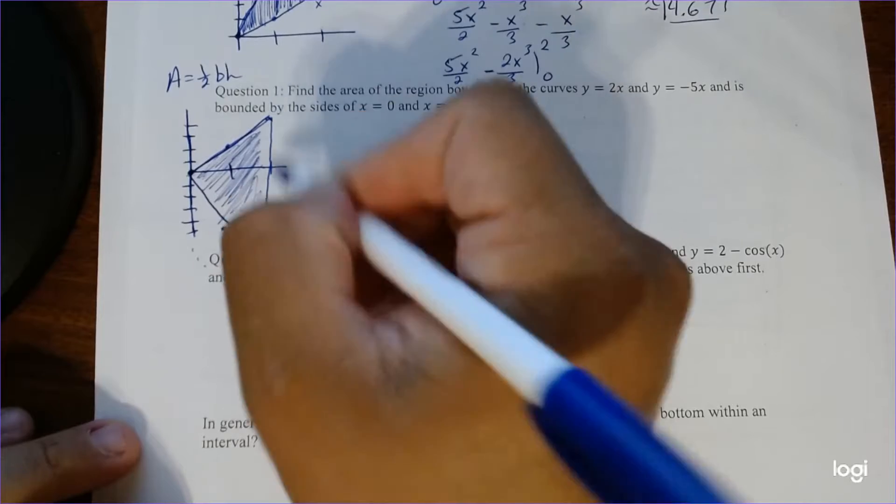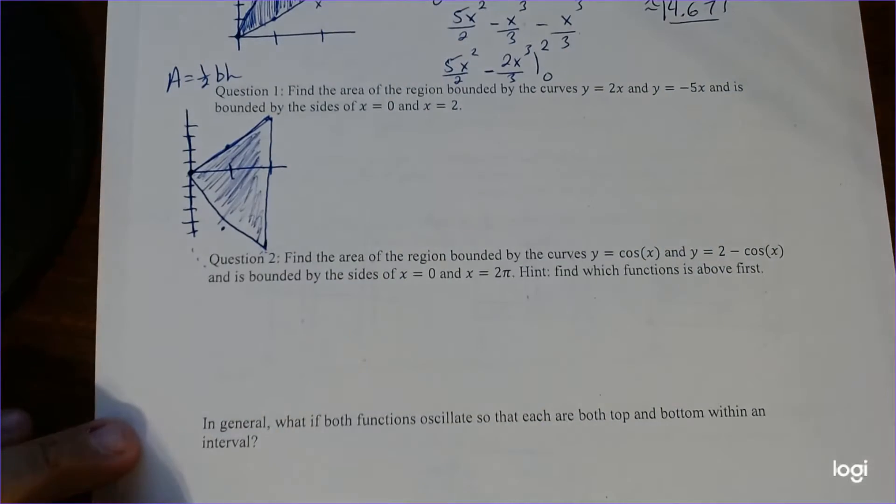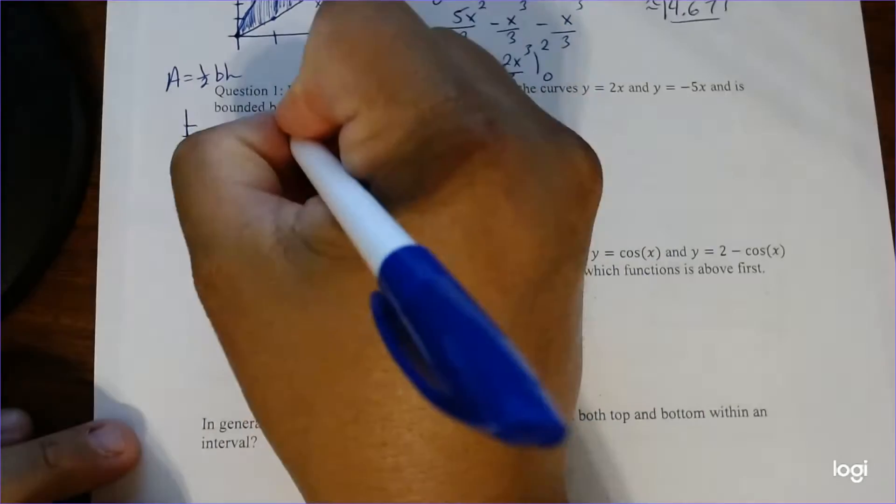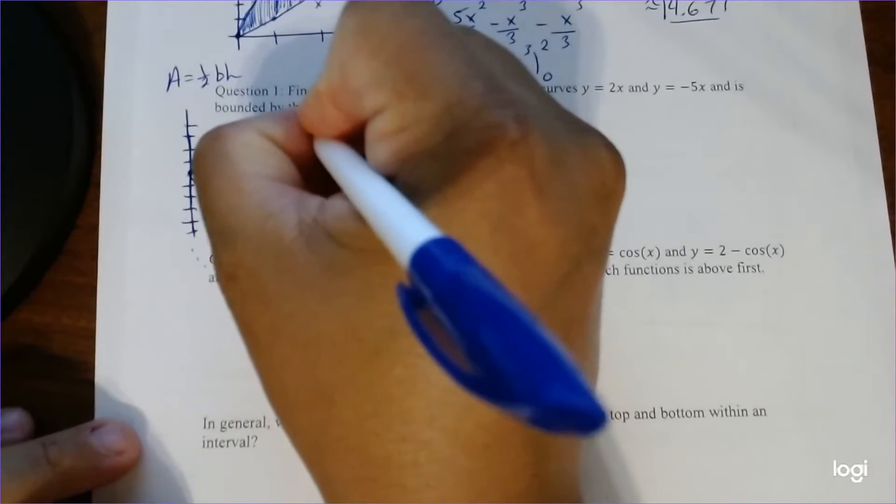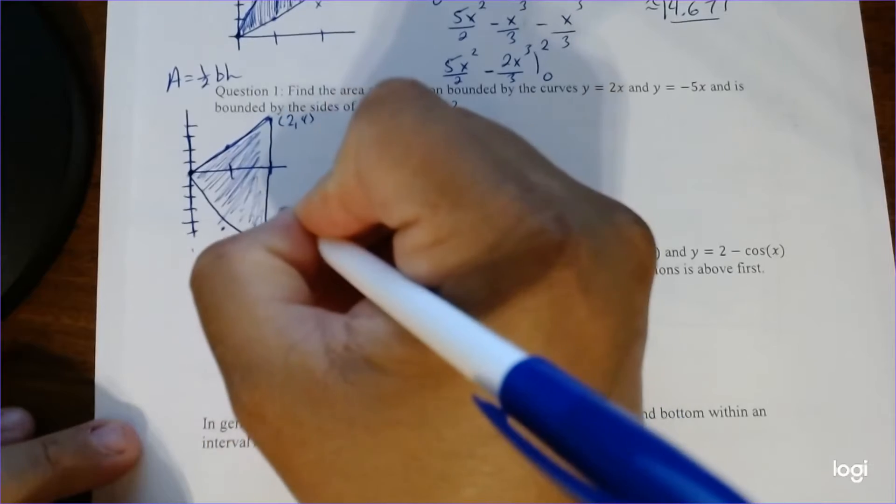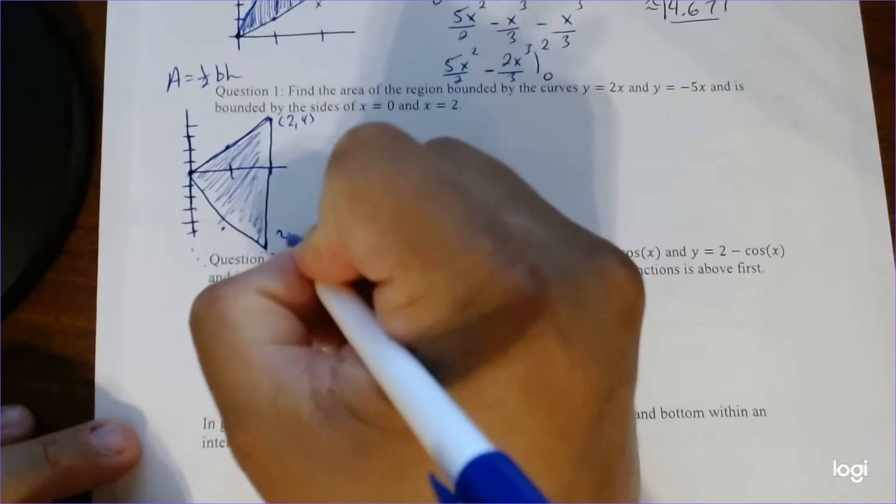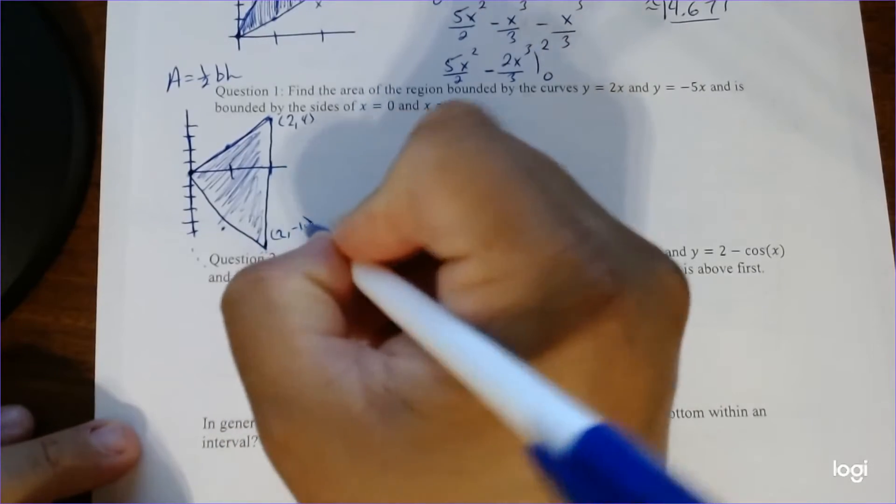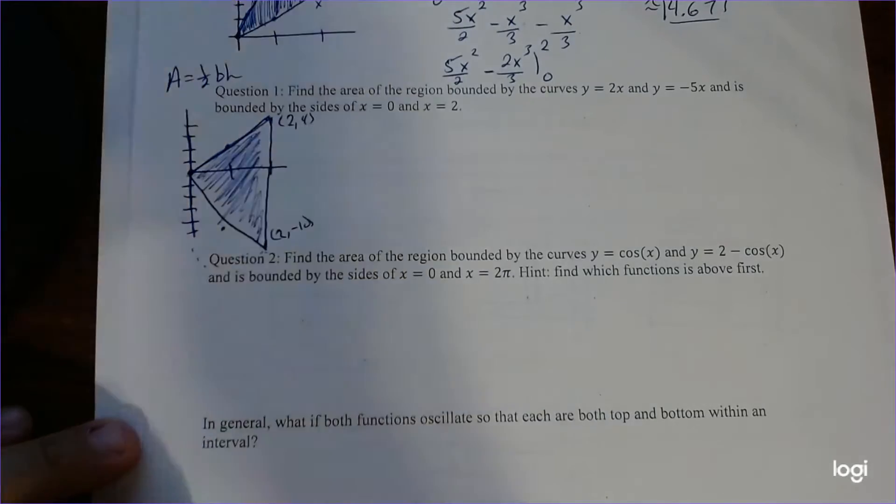The base is the difference from here to there, which again, you can also calculate pretty straightforward, right? This is the point 2, 4. So a distance of 4 here. And here's a distance of 10. So this is the point 2, negative 10. So that distance is going to be 14.